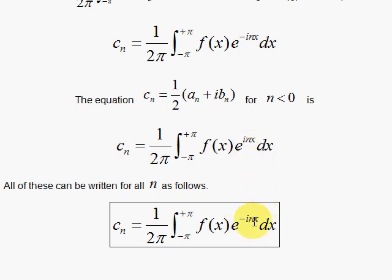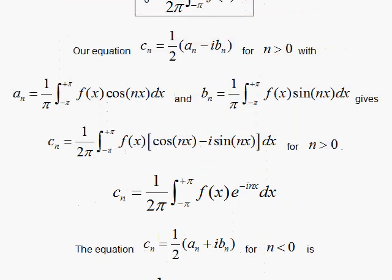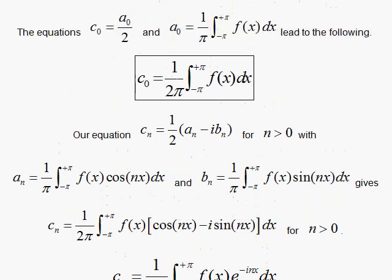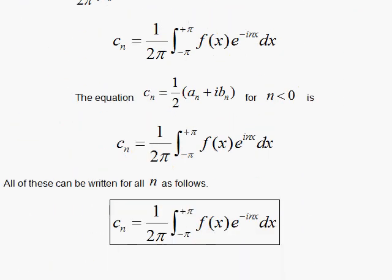And also, when n equals 0, I'll get the a sub 0 over 2 effect over here, the c sub 0, because when you have 0, the exponential will be 1, so I'll get this formula which came from that a_0 over 2. So that means this covers everything. That is very, very elegant.